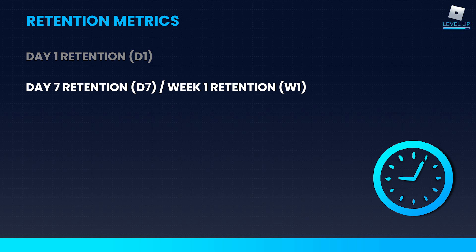Next, we have our day seven or week one retention. This metric indicates whether or not my progression systems are working in my game. We've talked on Level Up before about your short, medium, and long-term goals for the game. Day seven retention is a good indication of my midterm goals — as a player, am I thinking about what I'm achieving next week? If a player can't identify that, chances are they're not going to return to your game. So day seven and week one retention is a good indication of the success of your progression systems.